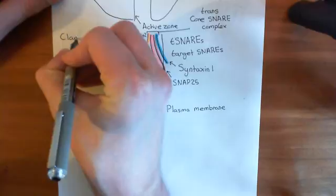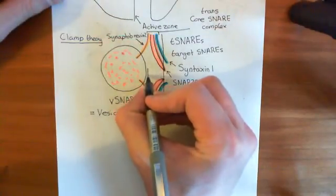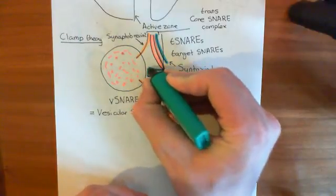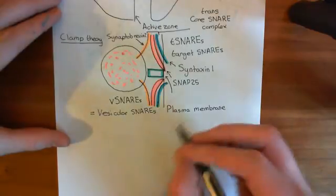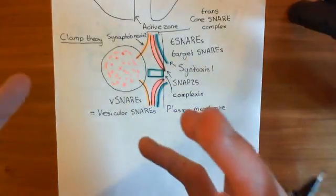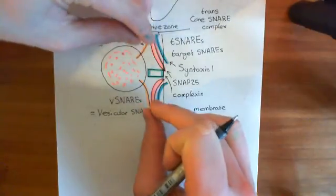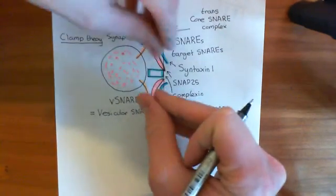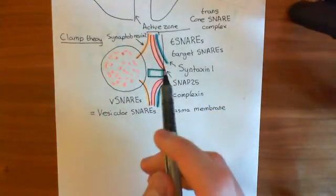It's known as the clamp theory. The clamp theory is that basically there is a clamp protein stuck in the middle, holding these two membranes apart and stopping them from fusing. The protein speculated to be this clamp protein is known as complexin. Complexin sits between the vesicle membrane and the plasma membrane, stopping the SNARE complexes from pulling the membranes together and fusing.